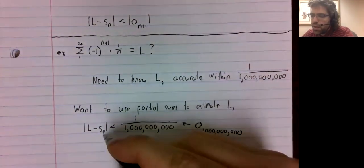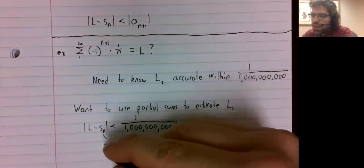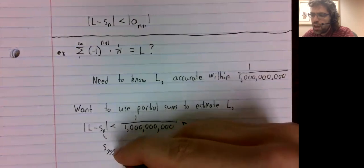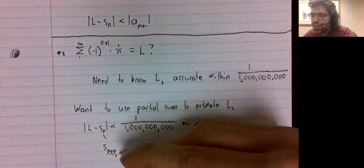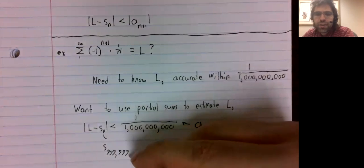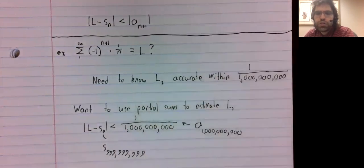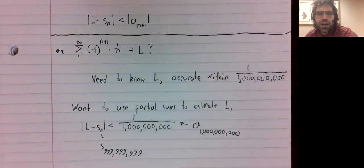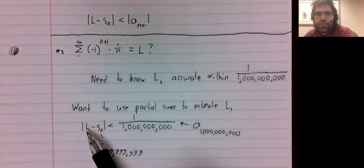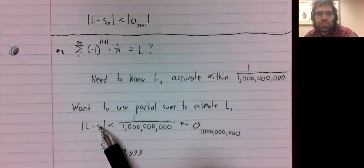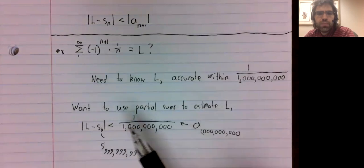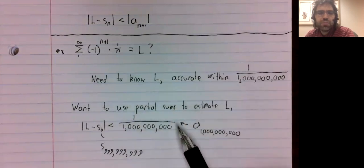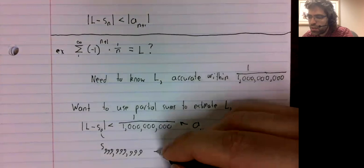999 thousand, 999, the difference between the limit and this partial sum will be less than one billionth.